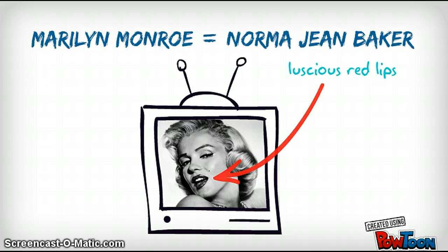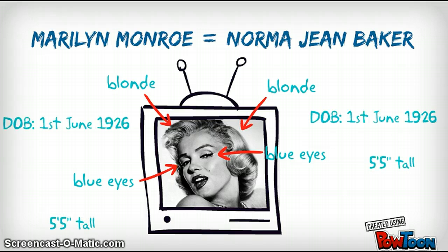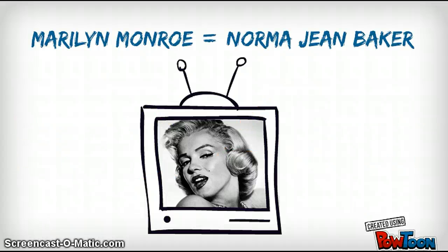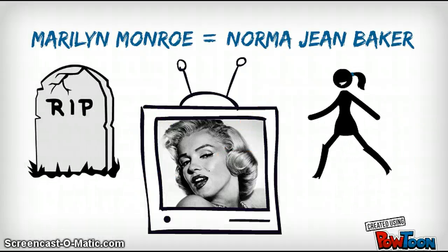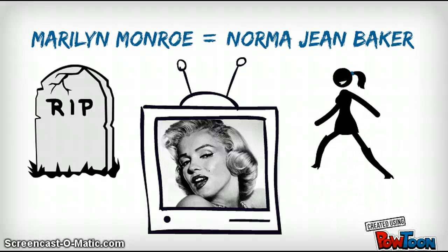And so on for anything you might care to mention, be it blonde hair, blue eyes, date of birth, height, or shoe size. There is nothing which is true of one which is not true of the other. Indeed, it would be a strange world we're living in were it the case that Norma Jean Baker was still walking around out there somewhere, when Marilyn Monroe has been dead for decades.